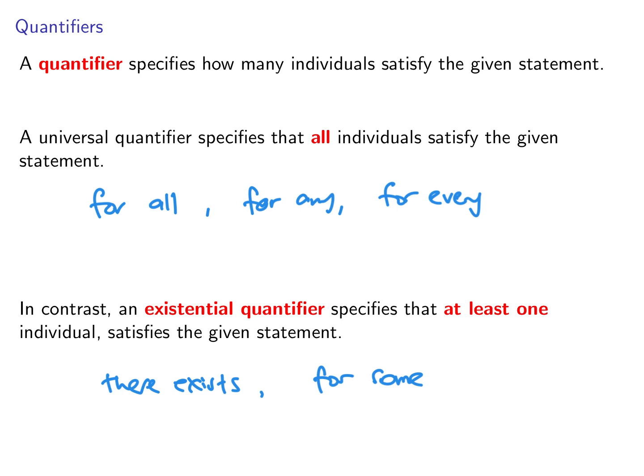Let's give some example. Example of a universal statement or statement with universal quantifier: For all natural number N, if N is odd, then N squared is odd. That's an example.